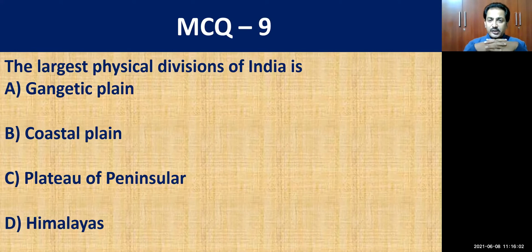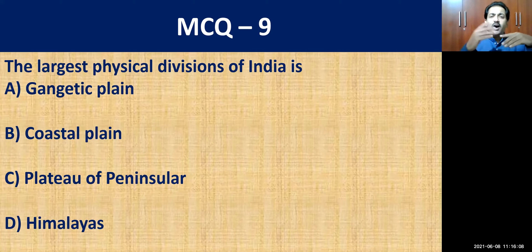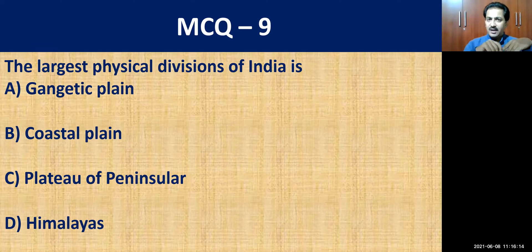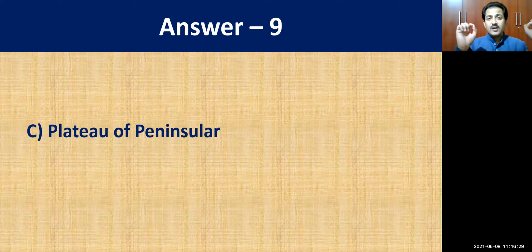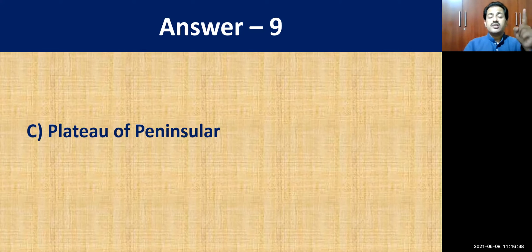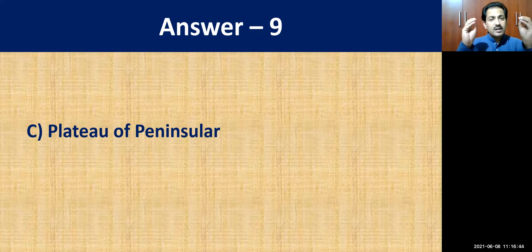MCQ question number nine: the largest physical division of India is — Gangetic Plain, Coastal Plain, Plateau of Peninsula, or Himalayas? The correct answer is Plateau of Peninsula. It stretches to about 16 lakh square kilometers. It is the oldest and the largest physical feature in India, formed many millions of years ago.